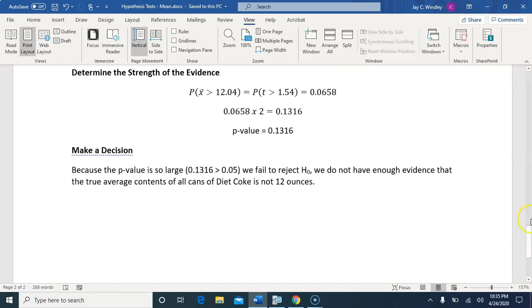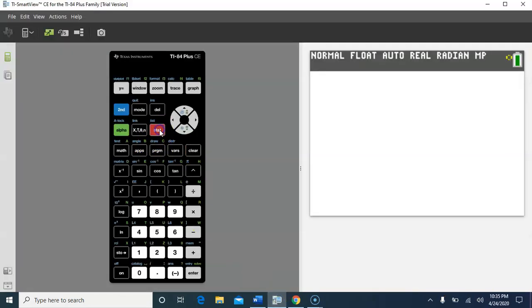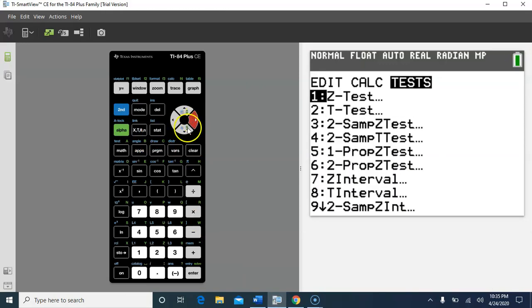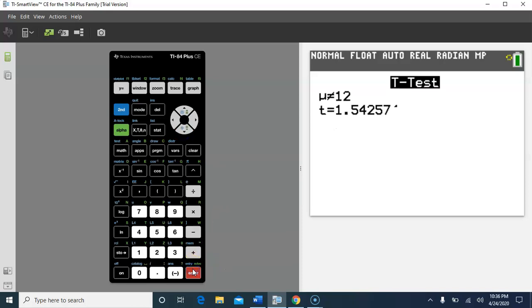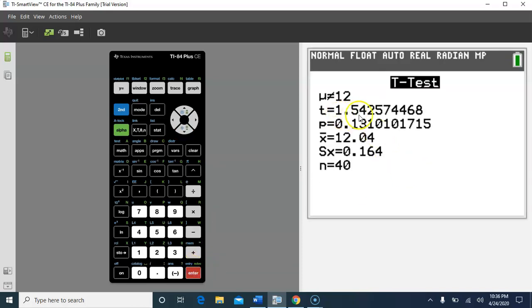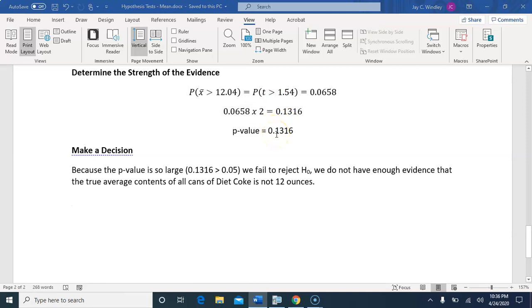Let's take a look at how to do all that on the calculator. So once again, the stat button, and arrow over to the test menu, and the second item down is a t-test. So mu subscript 0 is the mean from the null hypothesis, which is 12. Our sample mean is 12.04. Our sample standard deviation is 0.164. Our sample size is 40. And our alternative hypothesis has a not equal to sign. And we calculate. And there's our t of 1.54. And there's our p-value of 0.13. That matches our p-value of 0.13 over here.